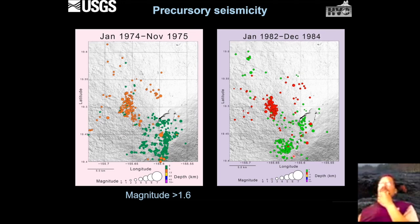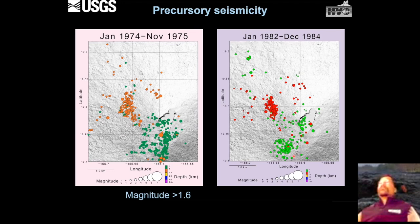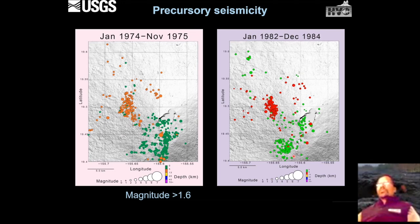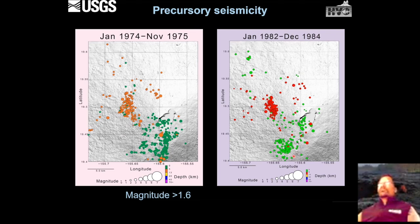All of the magnitudes shown here are greater than 1.6. If we were to show all magnitudes of earthquakes, you could take the population seen on each slide and roughly multiply it by five — so for all earthquakes, there would be five times more dots on this map.